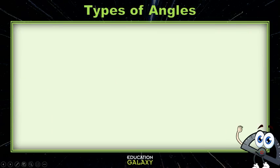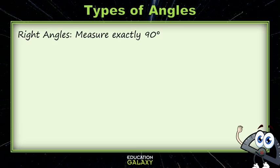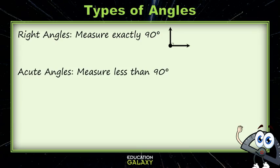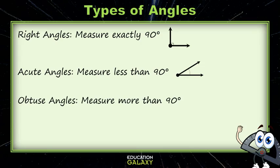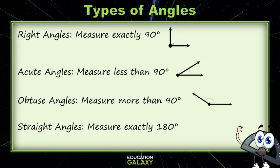There are several different types of angles. Right angles are angles that measure exactly 90 degrees. Acute angles are angles that measure less than 90 degrees. One easy way to remember these smaller angles is that they're so cute. Get it? Acute angle? Obtuse angles are angles that measure more than 90 degrees. And straight angles are angles that measure exactly 180 degrees, which are straight lines.